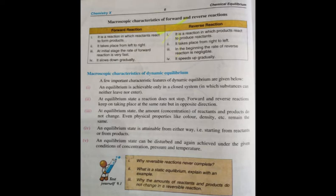In a closed system, nothing comes in or goes out, so there is no external effect on the concentrations. The concentration of reactants and products will remain constant. For example, when hydrogen gas, which is colorless, and iodine gas, which is purple in color, react with each other, the color remains stable at equilibrium.